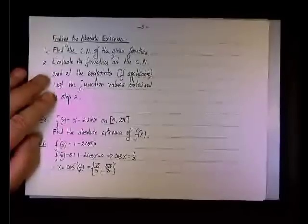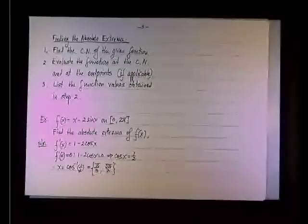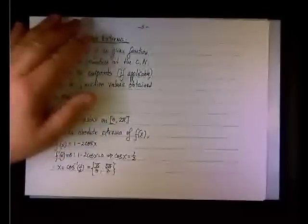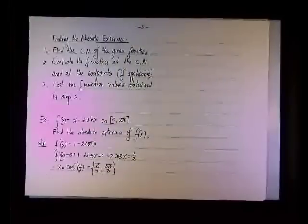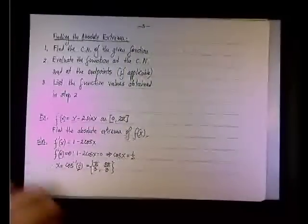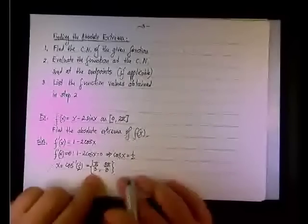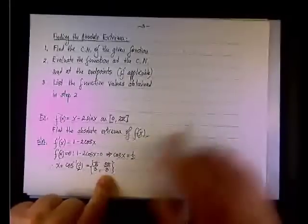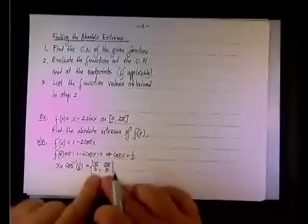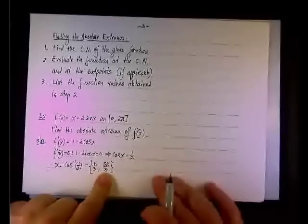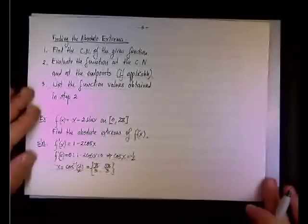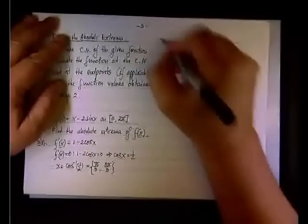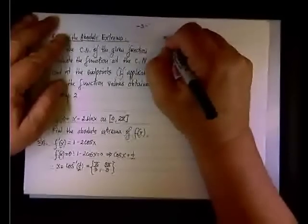We need to evaluate the function at the critical numbers as well as the endpoints. What I'll do next, I'm going to go by an order, and I'll say the following: that I need to evaluate f of zero, f of pi over three, f of five pi over three, and f of two pi. Endpoint, critical number, critical number, and endpoint. So I'll just list x in increasing order.